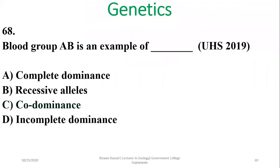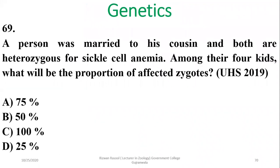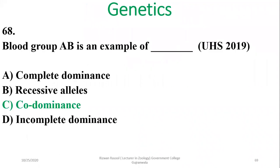Question 68: Blood group AB is an example of co-dominance in humans, as both A and B alleles are equally expressed.